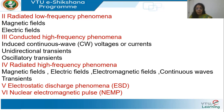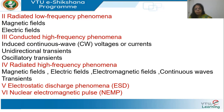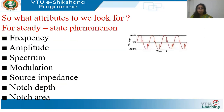Then we have radiated high-frequency phenomenon, due to electric fields, magnetic fields, electromagnetic fields (both combined), and some radiated transients. Then electrostatic discharge phenomenon, where static charges accumulate due to weather conditions and then discharge. Finally, nuclear electromagnetic pulse (NEMP). These are all the different classes as described by IEC.